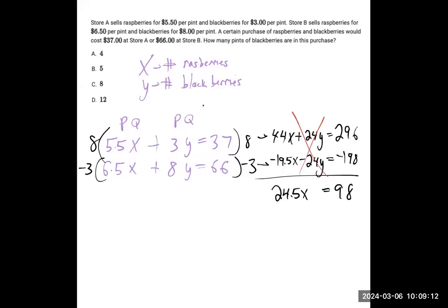Now we can divide both sides by 24.5, and you get a nice easy 4. So the number of raspberries being purchased at either store is 4.